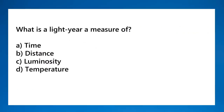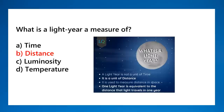What is a light year a measure of? A light year is a measure of distance, not time. It is a unit of distance — one light year is equivalent to the distance that light travels in one year. It is not a measure of luminosity, time, or temperature — it is distance.